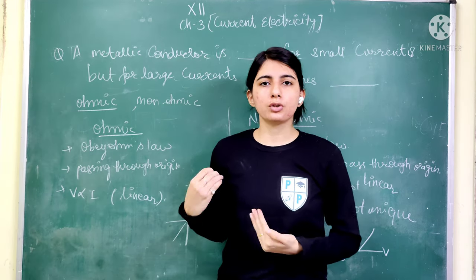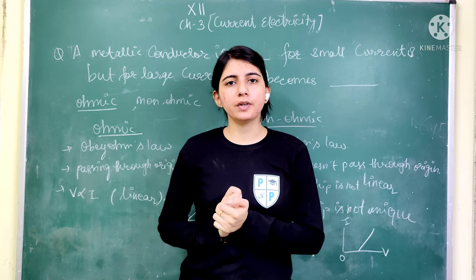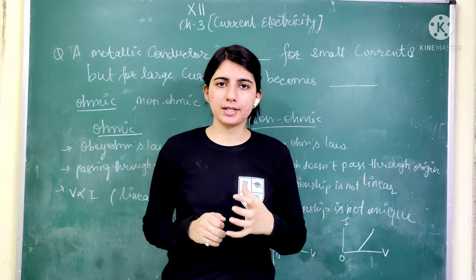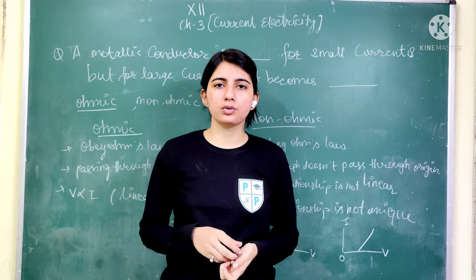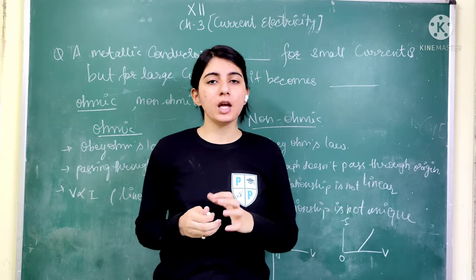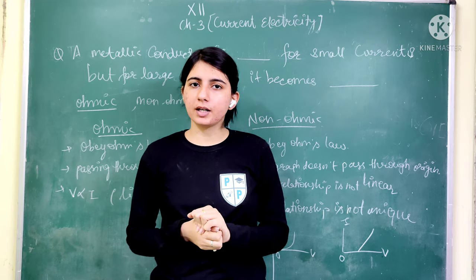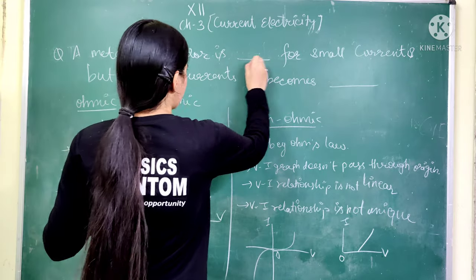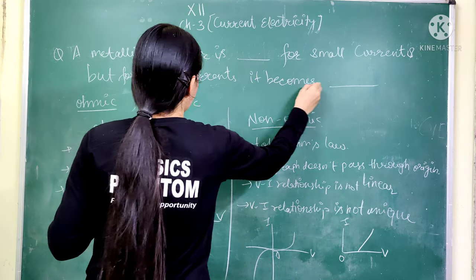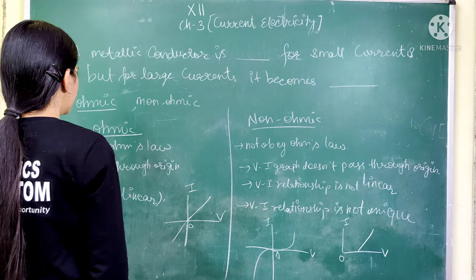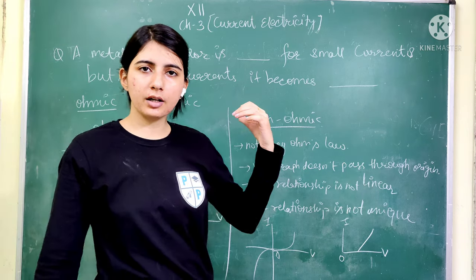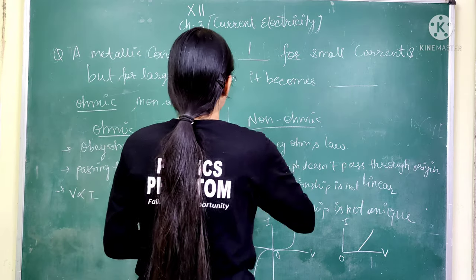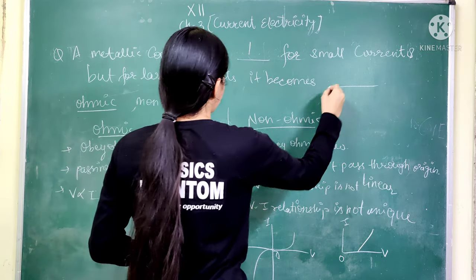The last question about ohmic and non-ohmic conductors is one of the most important questions. The concept, the differences, uses, and the graph are very important — this is definitely an exam question. For a metallic conductor, for small currents it is ohmic, but for large currents it becomes non-ohmic.